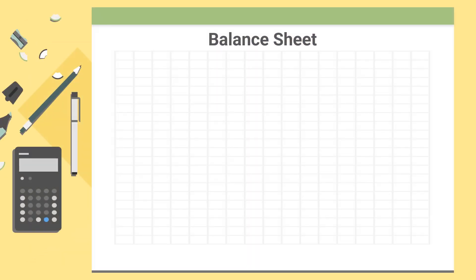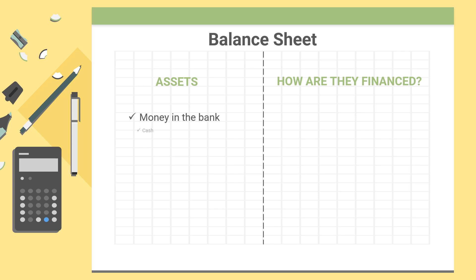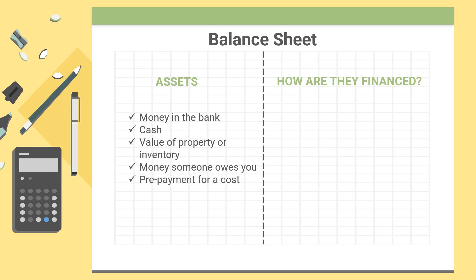The balance sheet is a financial statement that records, on the one hand, your NGO's assets, and on the other side, how they are financed. On the debit side of the balance sheet, you have listed all the assets of your NGO. This can be money you have in the bank, money you have in cash, value of property or inventory, or it can be money that someone owes you, e.g. a final rate from donors. An asset can also be a prepayment for a cost that will occur in the coming year.